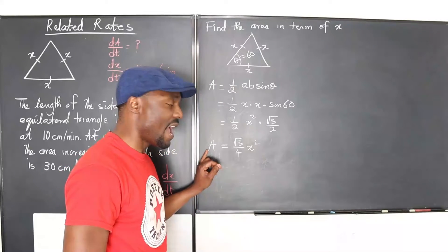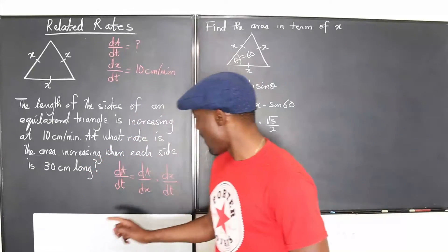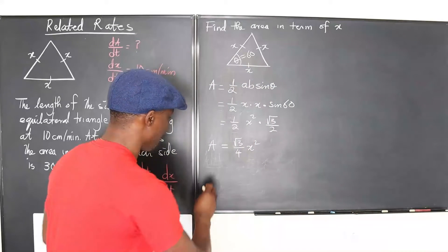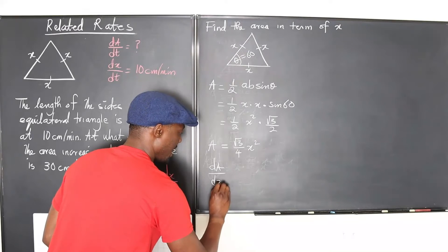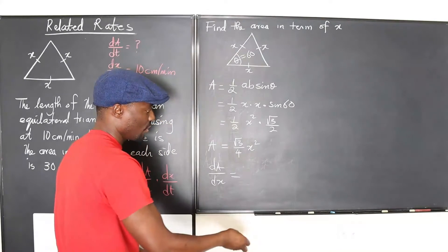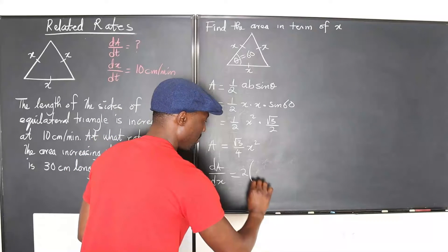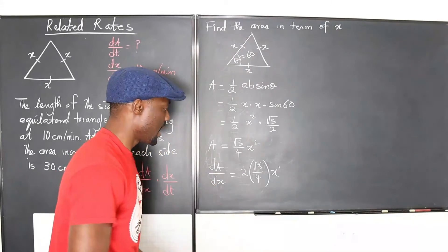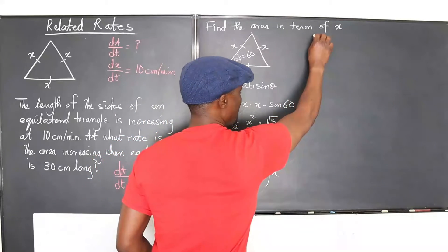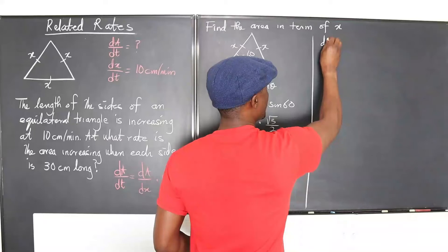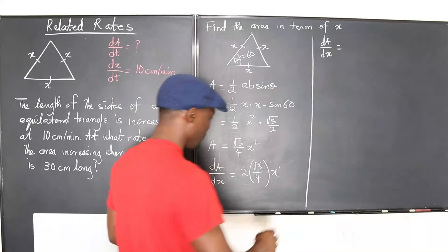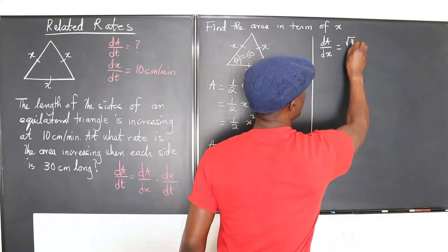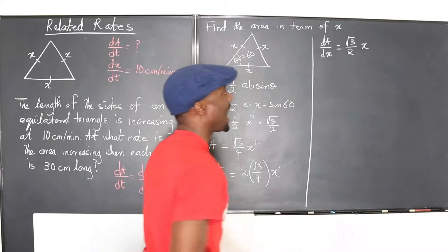Now, what's the rate of change of area with respect to the side? That's our dA/dx, which is what we need to find, because we already know this. What's dA/dx? dA/dx will be equal to the derivative of this. So if we bring down the 2, it's going to be 2 multiplied by root 3 over 4, and this x would be 2 minus 1, which would be x to the 1. So dA/dx equals - the 2 will take out one of the 2, so you have root 3 over 2 x. That is dA/dx.